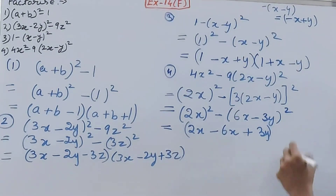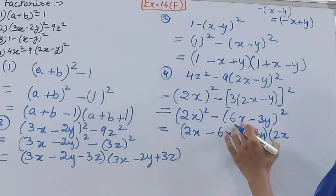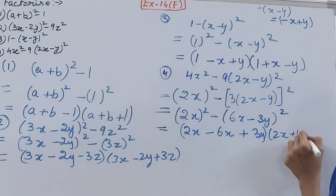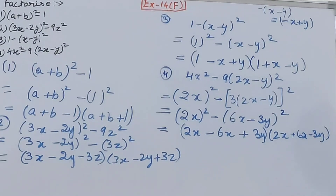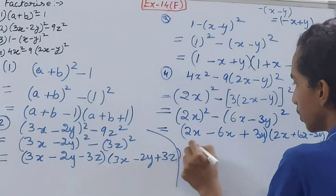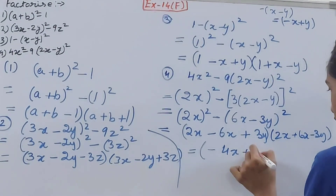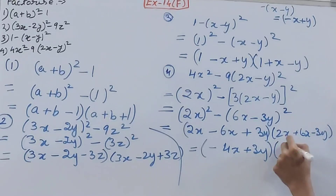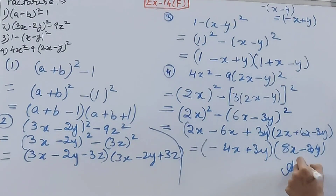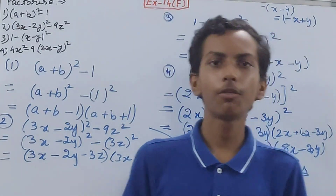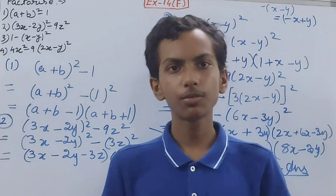The second bracket (a + b) gives 2x + 6x - 3y = 8x - 3y, with signs unchanged. So the final answer is (-4x + 3y)(8x - 3y). That is all for today — if you are new to my channel, do not forget to subscribe and leave a like. Take good care of yourselves, bye bye!